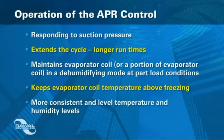The APR Control is installed in the condenser section of the unit. There is no external piping on split systems, as normally associated with hot gas bypass.